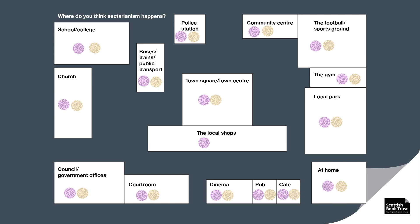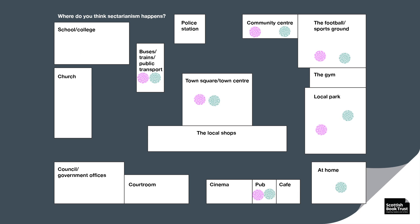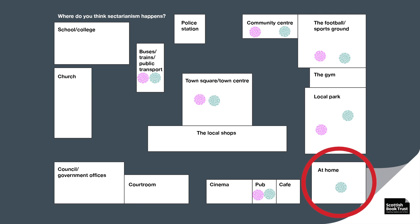This second pair of maps was created in a completely different community by a different group of learners and tutors. The first one was completed by a tutor and a learner working together, because the learner was not confident and asked for help. You'll see that on this map all but one of the locations have been marked by both. We think what happened was the tutor was making marks and the learner was simply copying them. If you look at the map by two learners working together, there is still some agreement, but one crucial difference: one of the learners has marked the 'at home' box.